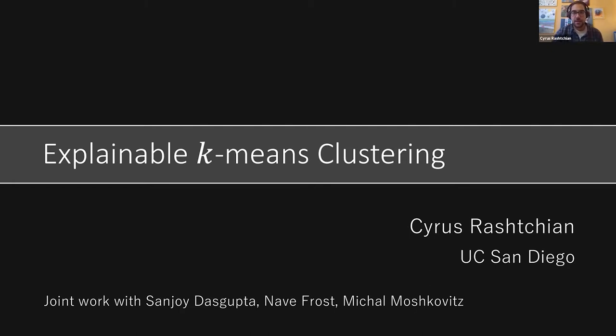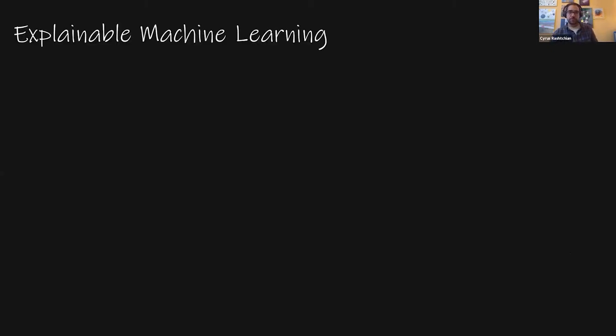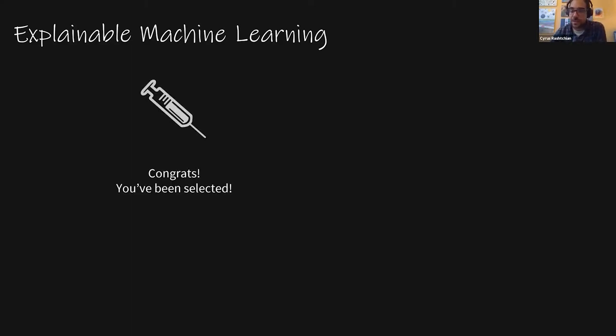Let me start by talking about explainable machine learning more generally. Algorithms are increasingly used for human-centered applications like healthcare, resume screening, and credit loans. The trust of these algorithms hinges on their transparency. For example, imagine you receive an email that says you've been selected to get the vaccine, and your friend asks why you and not them.